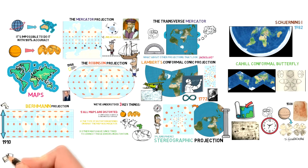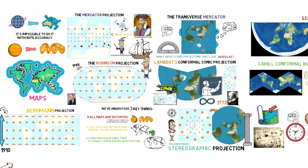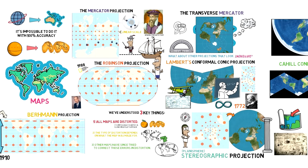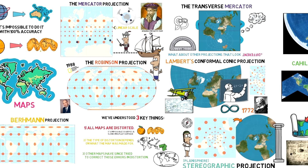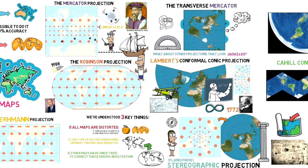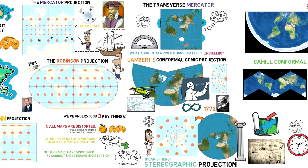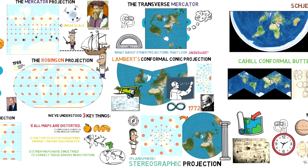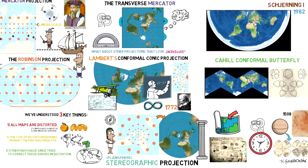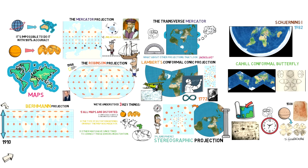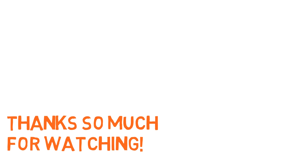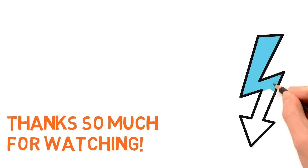So that is a quick overview of map projections — why they exist, why they are all necessarily inaccurate, how some prioritize depicting certain aspects correctly depending on what they were made for, and how some have attempted to be the most accurate possible. There are literally hundreds of other projections, but I couldn't fit them all into a video with an acceptable length. If you're interested, just Google it and you'll find endless information. Thanks so much for watching, subscribe if you want to, and leave a comment below with your favorite map projection. I'll see you next time for more general knowledge.